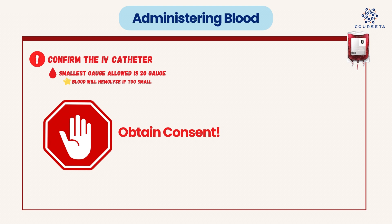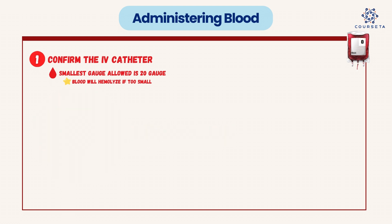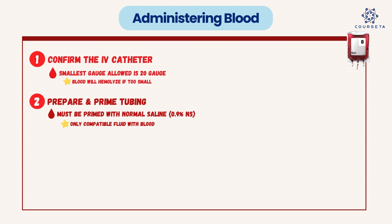Going on to specifically dealing with the blood: we want to prepare and prime the tubing. The tubing must be primed, and the only compatible fluid is normal saline. 0.9% normal saline is your only compatible IV fluid with blood — no other IV fluid should be mixed with blood.